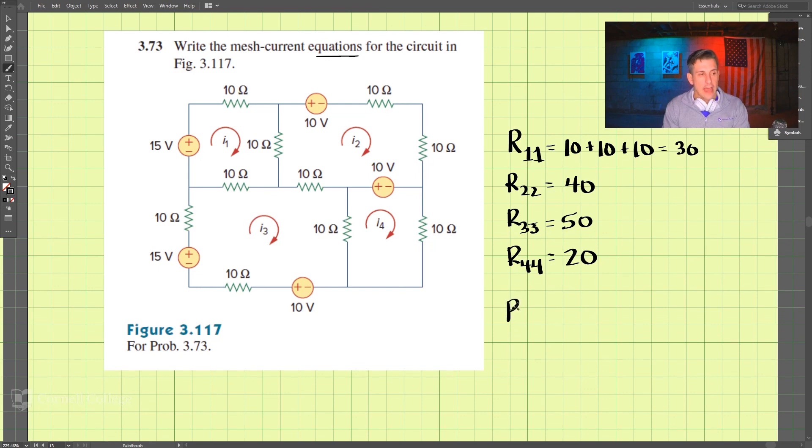Now we take a look at the connection between one and two, so between one and two here, and we write this as a negative, so it's got to be a negative 10. And between one and three we just have this one which is negative 10, it must be a negative. And between one and four there is nothing, so that is zero.